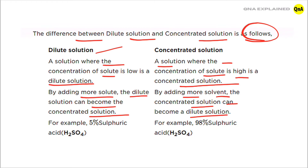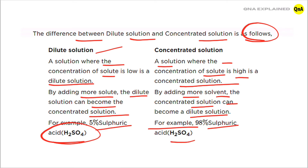For example, in a dilute solution: 5% sulfuric acid (H₂SO₄). In a concentrated solution, for example: 98% sulfuric acid (H₂SO₄).